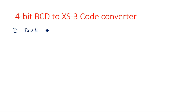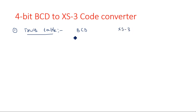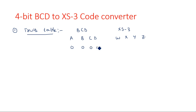The first step is the truth table. We consider the input data as BCD and the output as XS3. I am taking BCD inputs as A, B, C, D and XS3 outputs as W, X, Y, Z. BCD varies from 0000 up to 9.